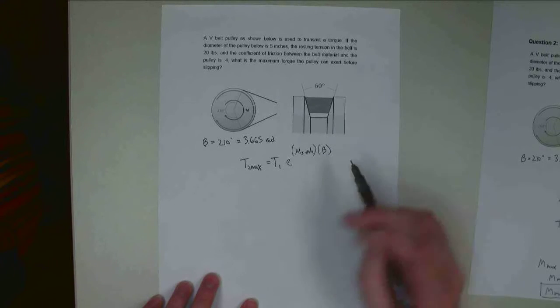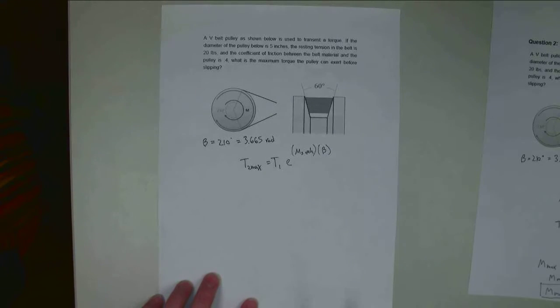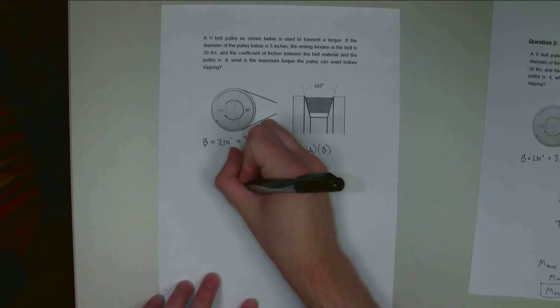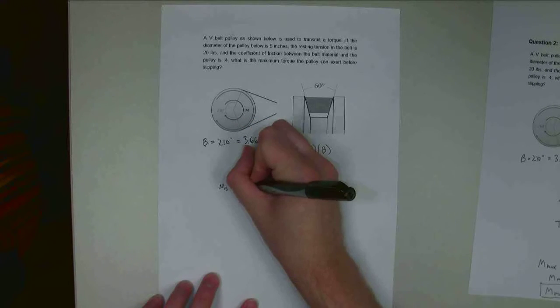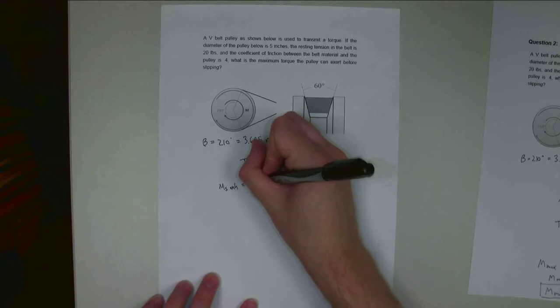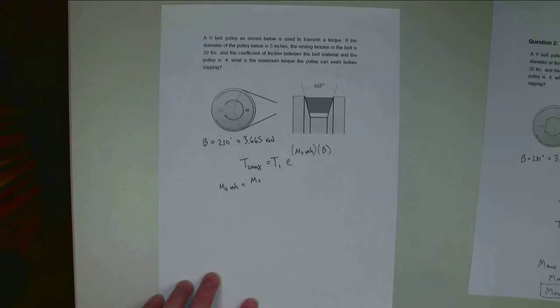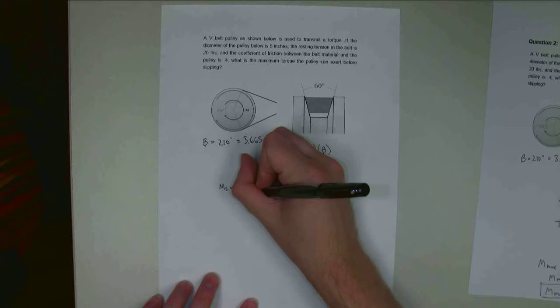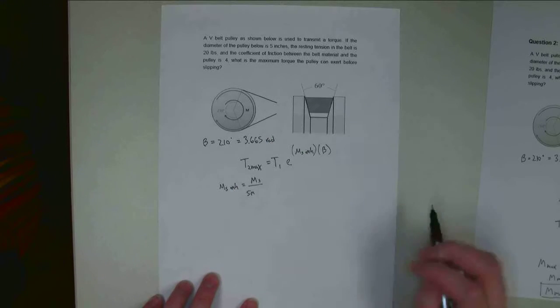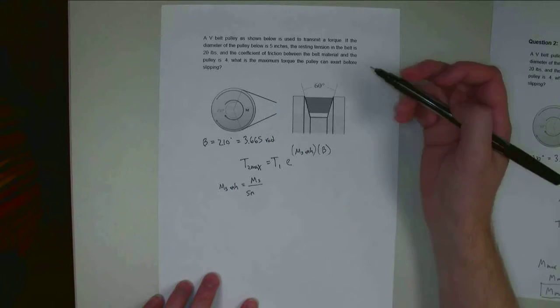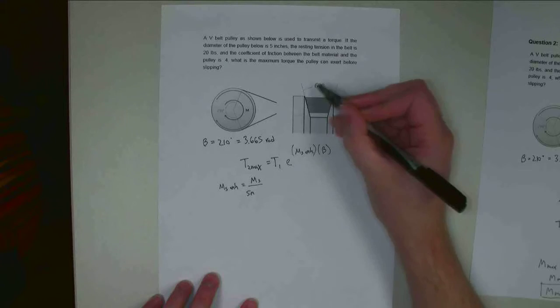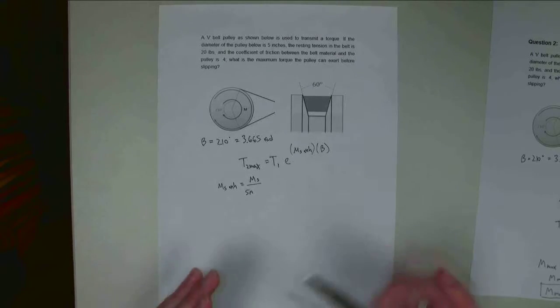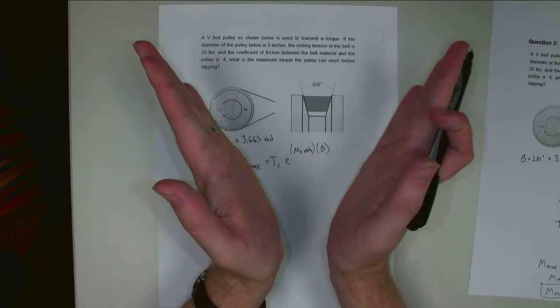All right, so let's figure out this mu static enhanced before we go too much further. Mu static enhanced is going to be equal to the static coefficient of friction, mu static, over the sine of this angle alpha.